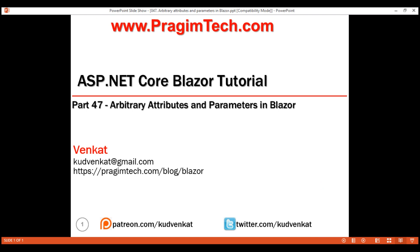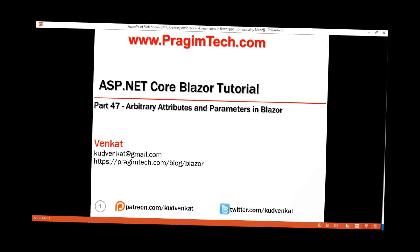This is part 47 of the Blazor tutorial. In this video, we'll discuss how a component can accept arbitrary attributes. This is a continuation of our previous video on attribute splatting.